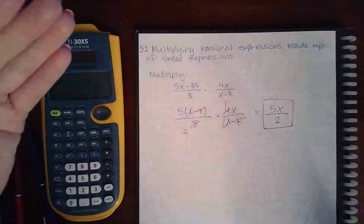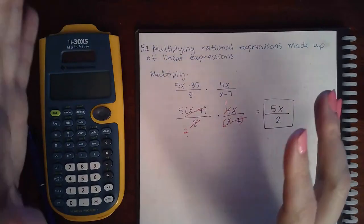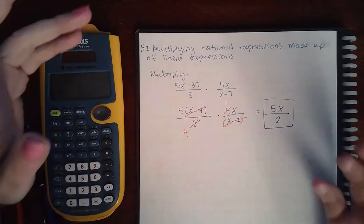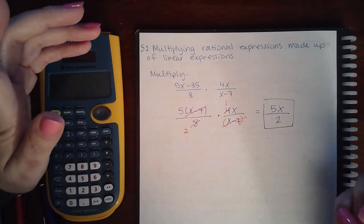Just make sure that all of your parts are factored. Once they're factored, you can cancel out common factors and reduce any numbers or variables with exponents that you might have.